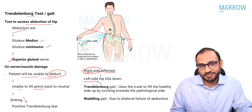Quick recap: zero to one year, if the child presents early, do Ponsetti serial manipulation and casting, change cast every one week above the knee, deformity corrected by eight to nine weeks. Use Dennis Brown splint till one year of age; after that use Dennis Brown splint at night and CTEV shoe in the day until around five years of age — that completes treatment. If the child presents after 10 years of age, correction becomes very difficult because bone has grown and soft tissue has contracted, so you fuse the foot — triple arthrodesis of talonavicular, talocalcaneal, and calcaneocuboid joints, with talonavicular being the most important.